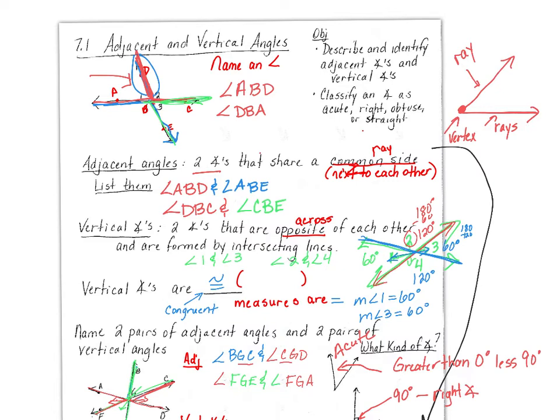Look at the next one. These two angles sit across from each other, so since they sit across from each other, they are vertical. And what do we remember about vertical angles? They are equal.